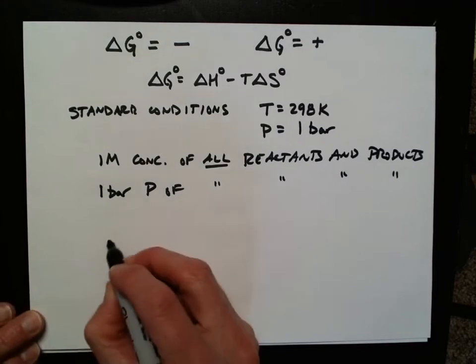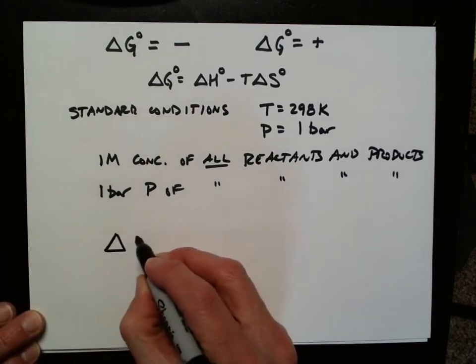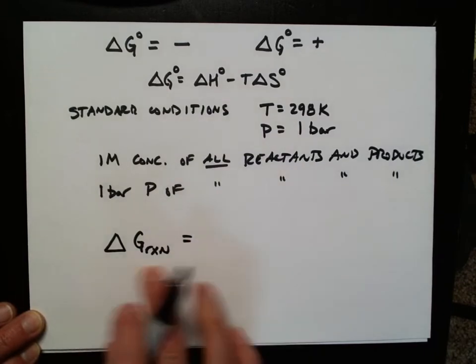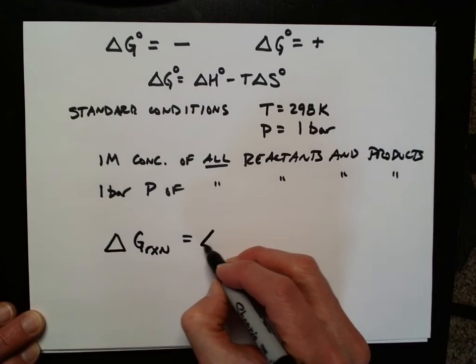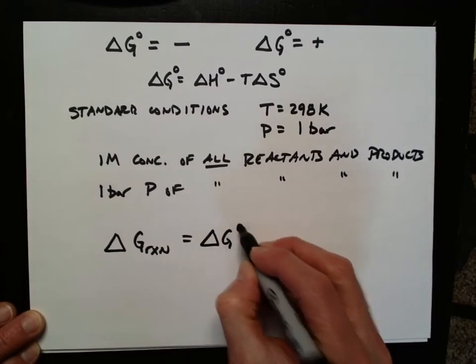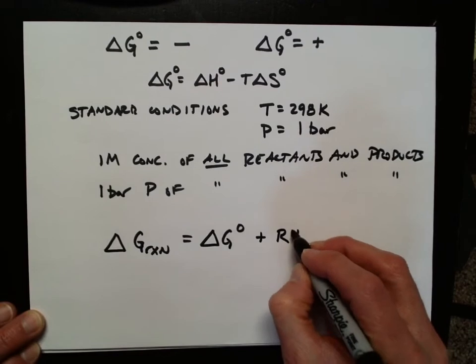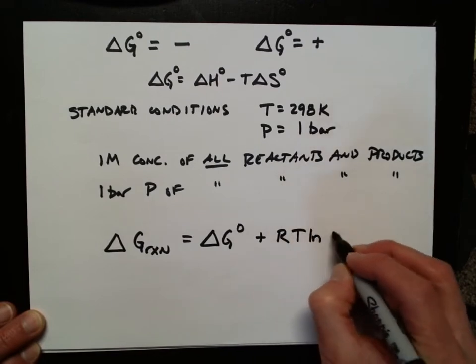And this is the equation that's shown on this particular slide. The Delta G for a reaction under whatever conditions we need to understand it at is going to be found by taking the standard Delta G and then adding to that R T times the natural log of Q.